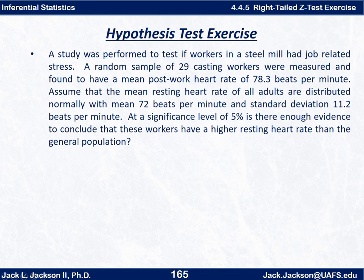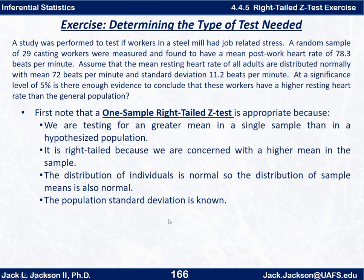Okay, you're back. Hopefully you actually tried this yourself. First, we have to decide what kind of test is needed and if we have all the appropriate conditions met. This is going to be a one-sample right-tailed z-test. The test needs to meet these conditions: we need to be making a test concerning means, and we're testing for a greater mean in a single sample than in a hypothesized population. It's right-tailed because we're looking strictly for a higher mean in the sample than in the population.